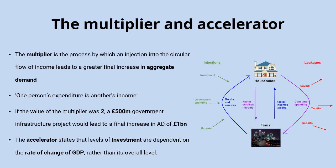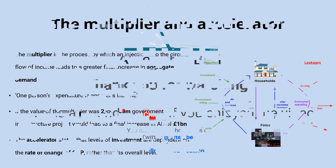The same thing happens in reverse. So when GDP starts to fall, investment rapidly drops, and the resulting negative multiplier effect causes the cycle to slow down and move back towards a slump.